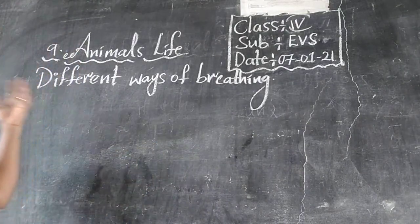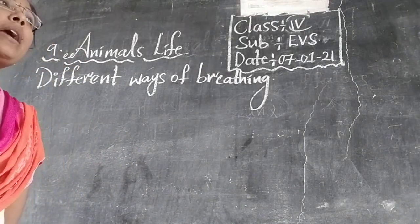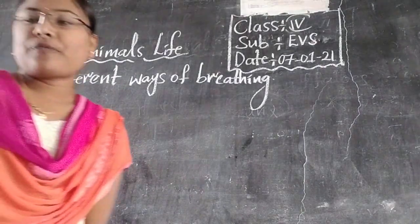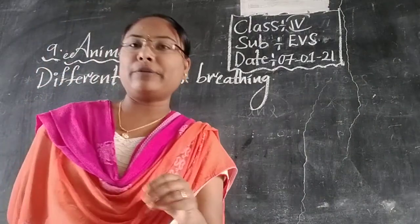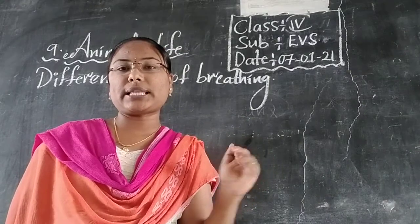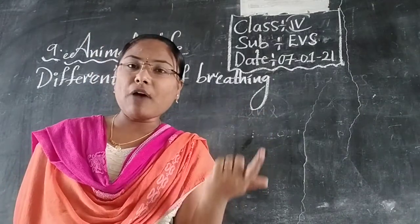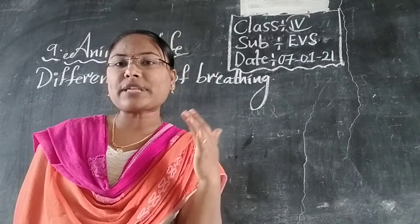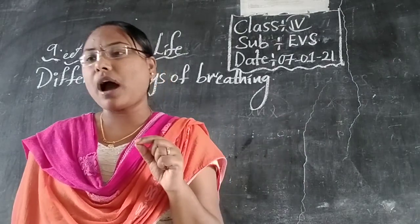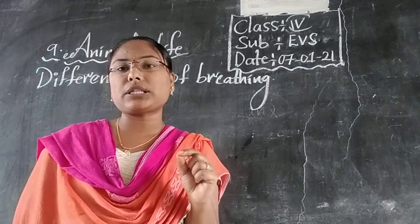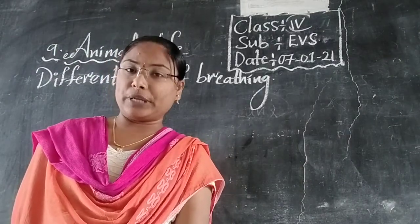Today we will explain different ways of breathing. Fact finder: Monkeys are omnivores by nature. Monkeys eat a variety of food items — fruits, flowers, small insects, and small frogs also. So monkeys are omnivores.